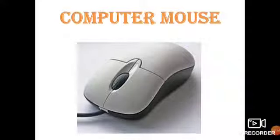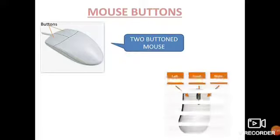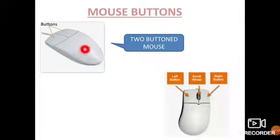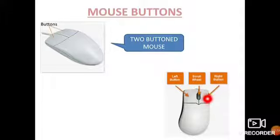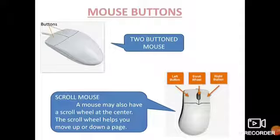Have you seen the mouse? Today let us study what actions we can perform with the help of the mouse. The first topic is mouse buttons. Generally the mouse has two or three buttons. The mouse with two buttons is called a two-button mouse. In a three-button mouse, we have a left button, a right button, and in between we have a scroll wheel, which helps us to move up and down the page.